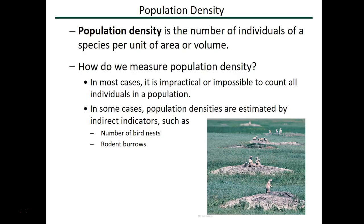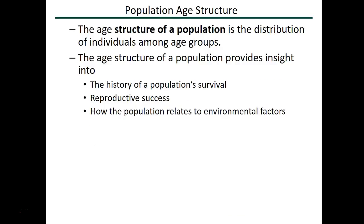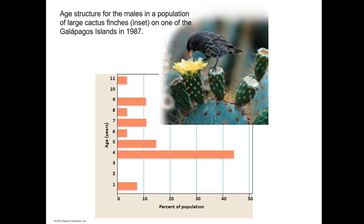The age structure of a population is very important. This is the distribution of individuals of different ages — how many juveniles, how many adults, how many reproductive individuals. Age structure is helpful because it shows the history of survival of individuals in that population, gives an idea of reproductive success, and shows how that population is related to environmental factors.